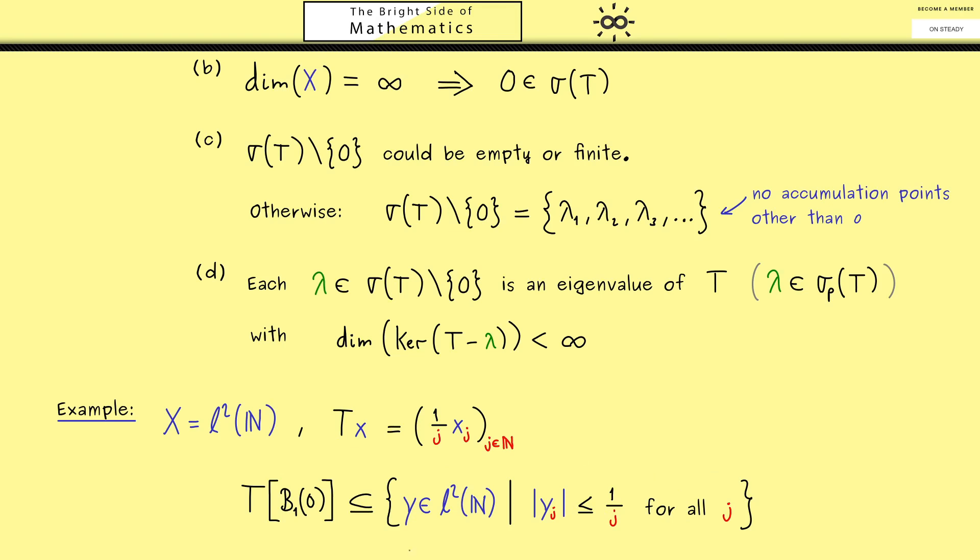However now this right hand side here is a very famous set, it's the Hilbert cube. In fact it's famous because it's an infinite dimensional cube that is still compact. In other words it's not so hard to show that this is a compact set in L^2(N).